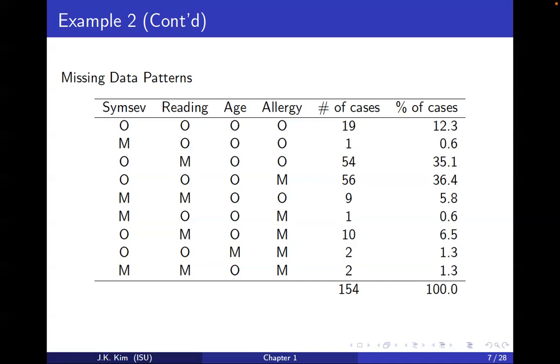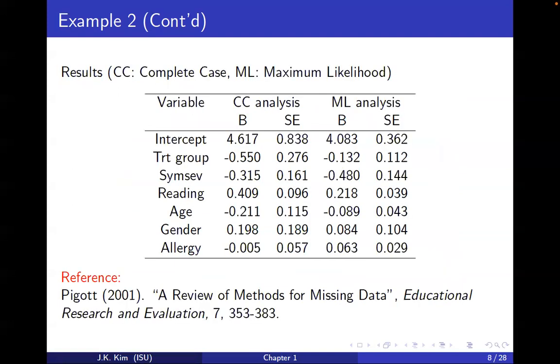Usually with medical data, suppose you have a drug product and you need to pay incentive. Say we pay $100 for each patient. The total cost is 154 times 100, so $15,000. You spend $15K and end up throwing away all this money and using only 19. If you report that, your boss will be very angry because you're not doing a good job utilizing all the information.